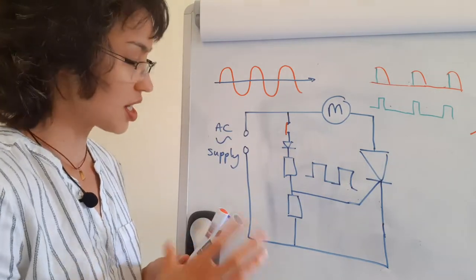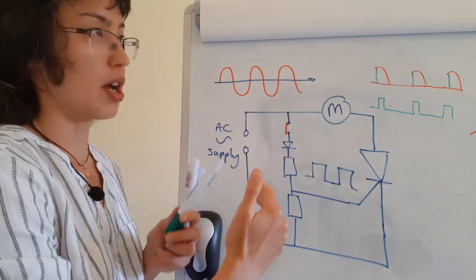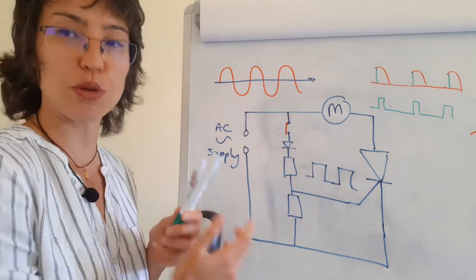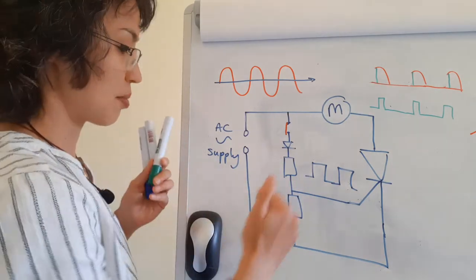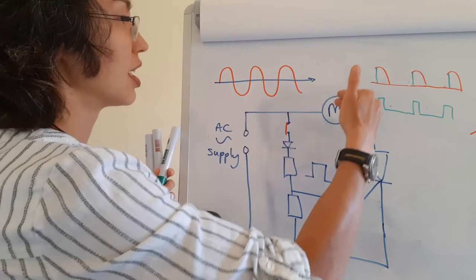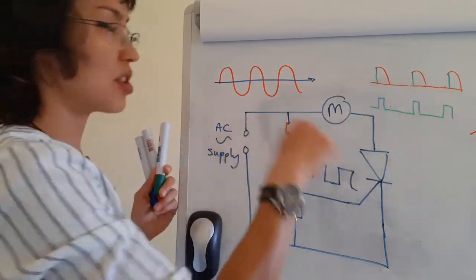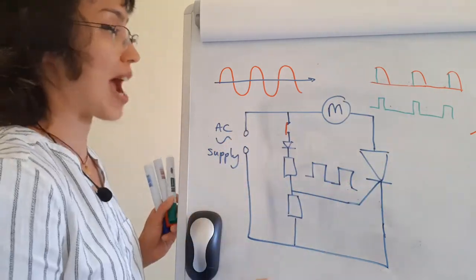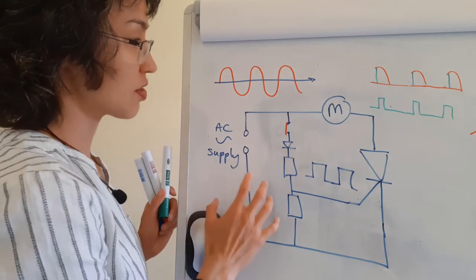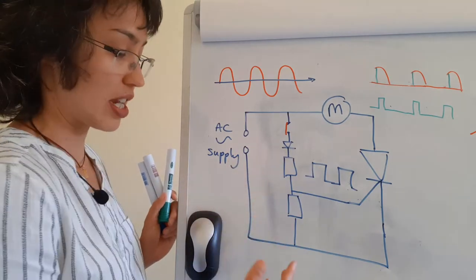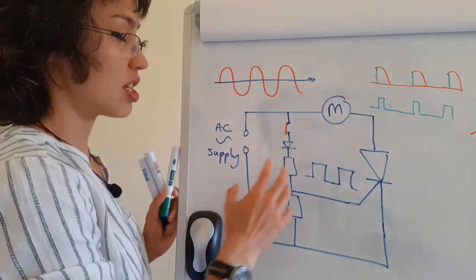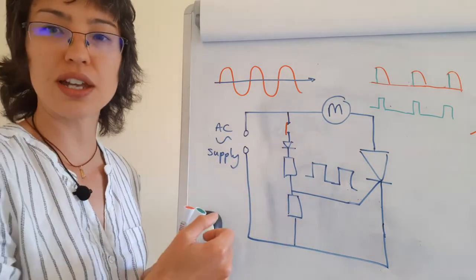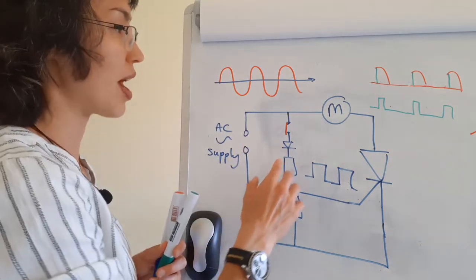And what you see is you only get a partial wave cycle. So this is a method of adjusting how much power output you get, because I'm essentially choosing how much of my AC signal I'm getting put out. And this is really useful — it's called AC phase control. It's really useful for things like dimmer switches and lights, because you can turn them down in this way.